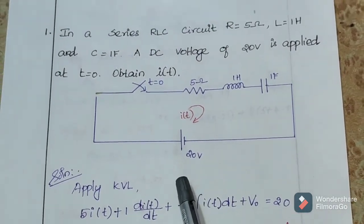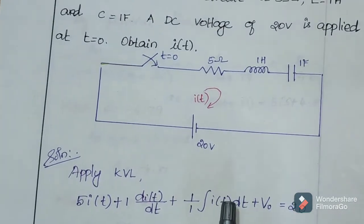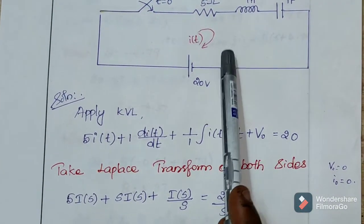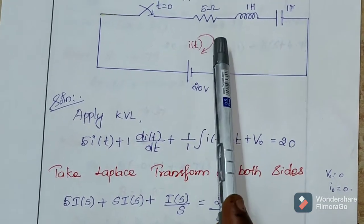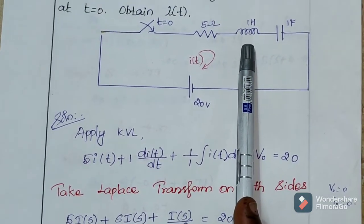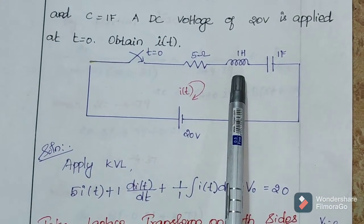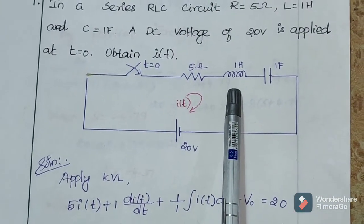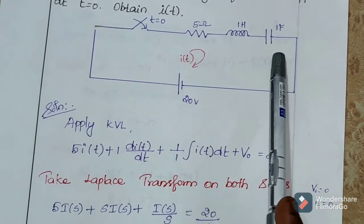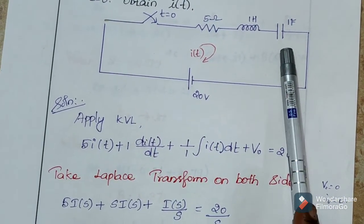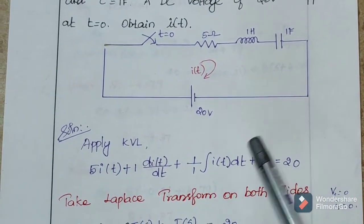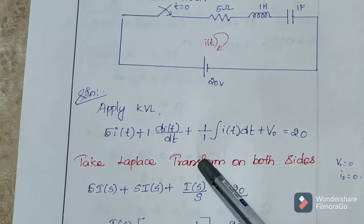We are going to find current value by using Kirchhoff's voltage law. So, 5 into I(t) plus what is the voltage value across inductor? Voltage value across inductor is L into dI(t) by dt. Here L value is 1. So, 1 into dI(t) by dt plus voltage value across capacitor is 1 by C into integral of I(t) dt. Here C value is 1.